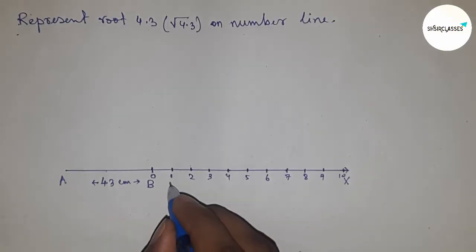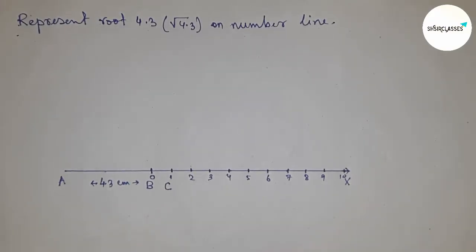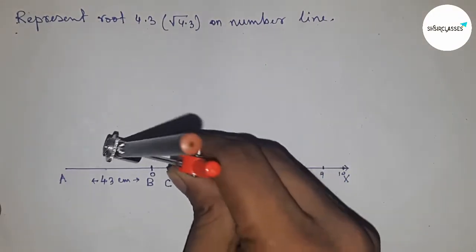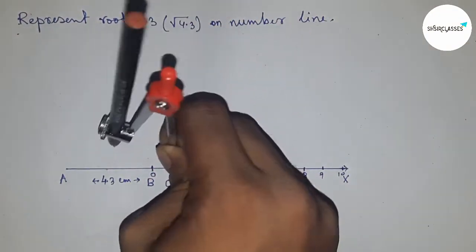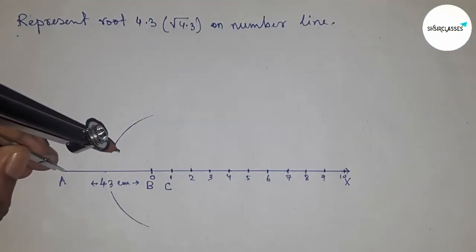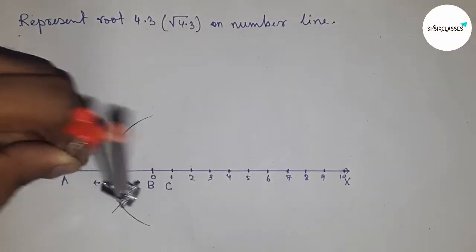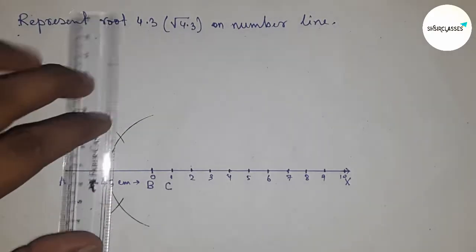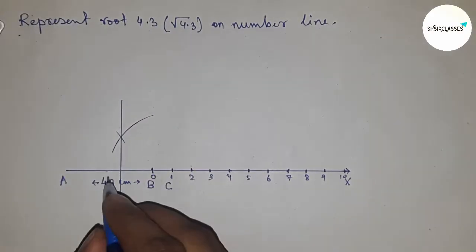Next, we have to bisect the line AC. Taking greater than half of AC and drawing an arc. Now bisecting the line AC by joining, which bisects the line AC at point O.